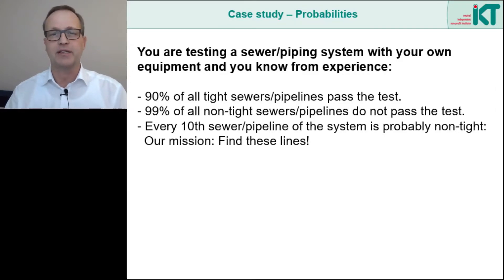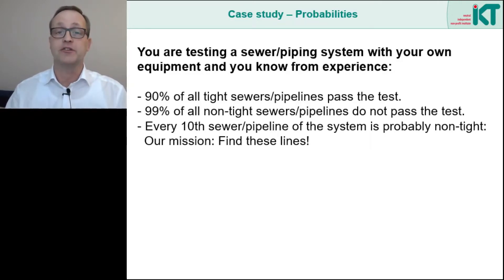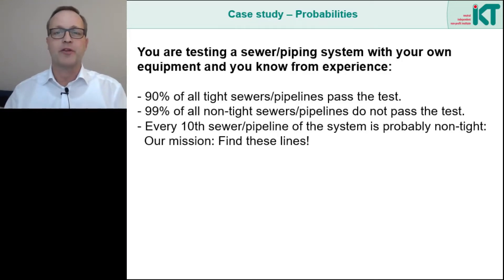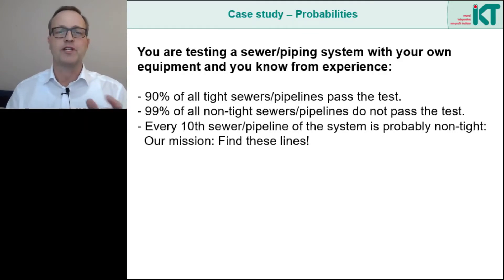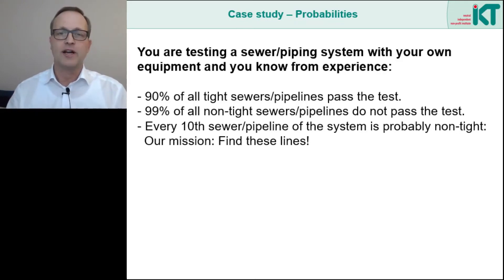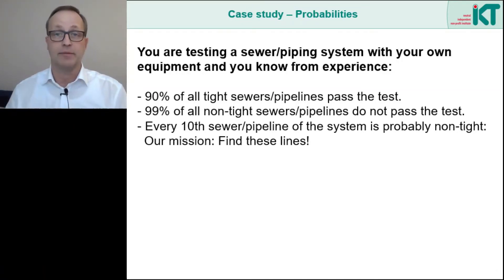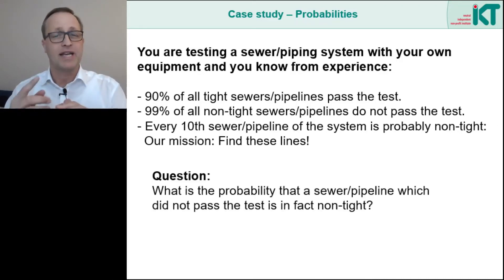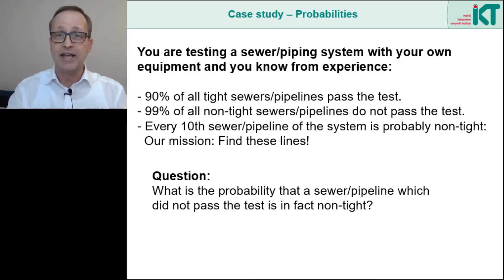These values of 90% and 99% are ones we were able to confirm in our research projects for the area of property drainage, with well-trained testers using perfect equipment. The third value concerns not the quality of testing but the quality of construction. You assume that every 10th sewer section is not in proper condition — every 10th sewer in the system is leaking. So the crucial question is: what is the probability that if the test is not passed, the tested line is actually leaking? After all, we only want to rehabilitate really defective sewer sections.